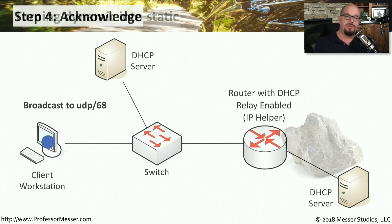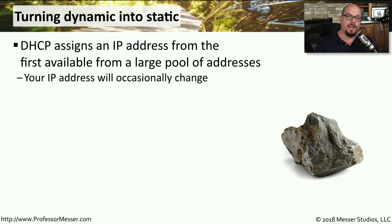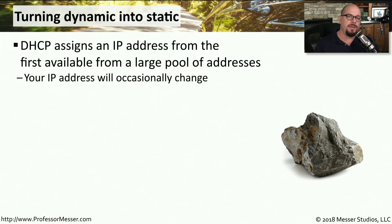On each of those DHCP servers, there was a pool of addresses configured. So any time a request was made for an IP address, any available IP address from that pool could be sent down to that client. This means that your IP address could occasionally change — the IP address you have this week might be different than the one you have next week.